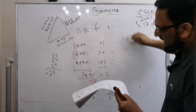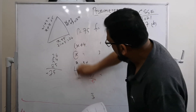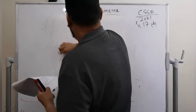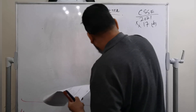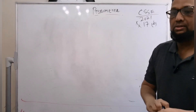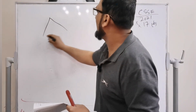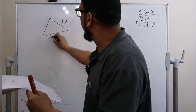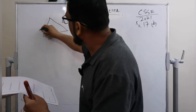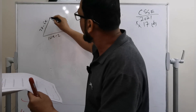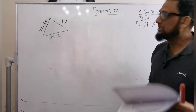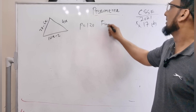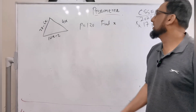Now for part B — same question but a different part, also a triangle. This time the sides include negative values: the three sides are 4x, 10x minus 2, and 77 minus 5x. The triangle has a perimeter of 120, and we need to find the value of x.